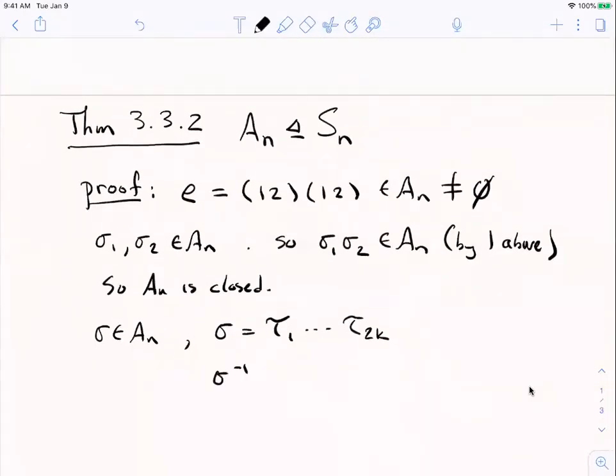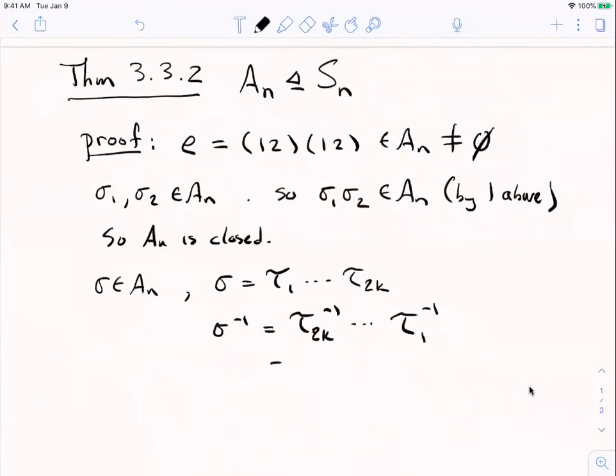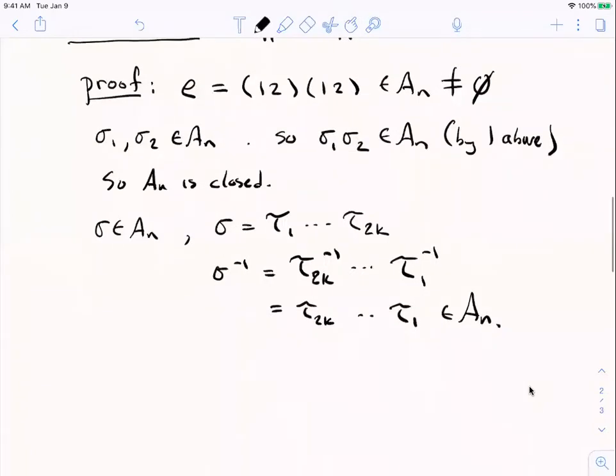Well, by socks and shoes, the inverse should be, take these transpositions and write each one of their inverses in the reverse order. But a transposition is order two. It is its own inverse. The inverse of a transposition is itself. So when you write those things in the opposite order, you still have an even number of them. So the inverse of an even permutation is even. Okay? So that shows that A sub n is a subgroup of Sn. Right?